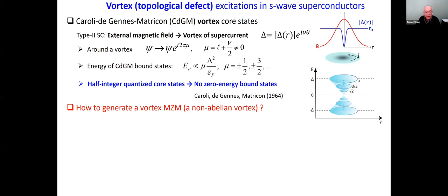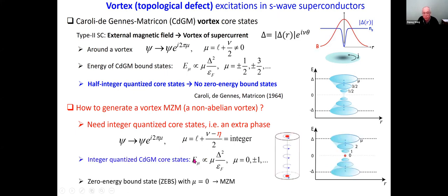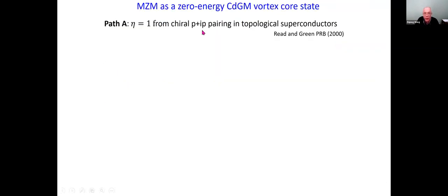So how do we generate a vortex Majorana zero mode — how to generate an Abrikosov vortex? Looking at the quantization condition, you have to turn it from half-odd integer to integer. To do that, you need an extra phase η. If you can do that, the core energy would be quantized by an integer: zero, plus or minus one, and so on. Therefore the one sitting at zero with quantum number μ equal to zero is the Majorana zero mode — a pair of degenerate states appearing at the ends of the vortex line. Path A: you get η equals one from a chiral p+ip topological superconductor or superfluid — the proposal of Read and Green. But nature hasn't been kind; there are very few candidate p+ip topological superconductors.